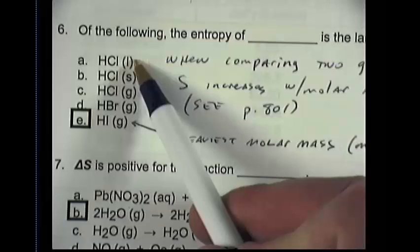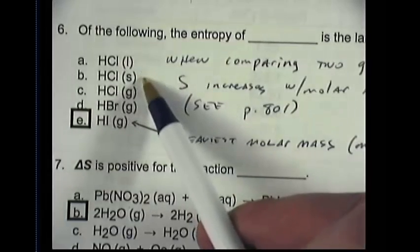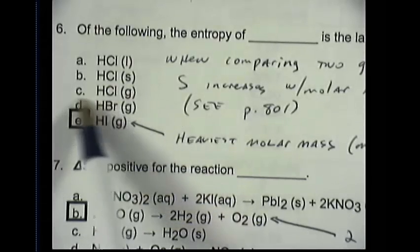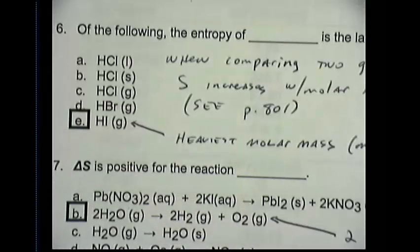I think we can agree that compound A is a liquid and compound B is a solid. Both of those are much more ordered and hence at a state of lower entropy than any of the options C, D, or E, which are all gases. In looking at options C, D, and E, we might wonder, how in the world do we determine which of those individual gases has the greatest entropy?